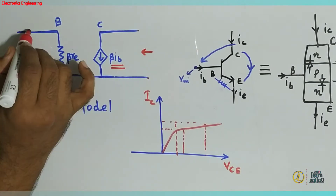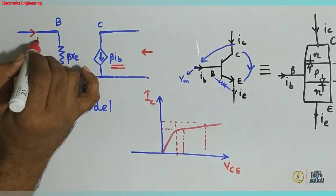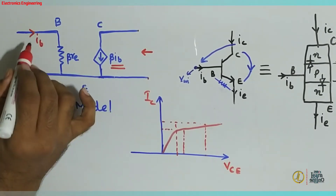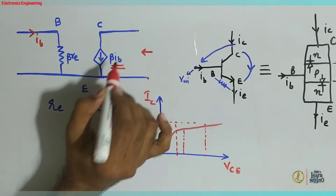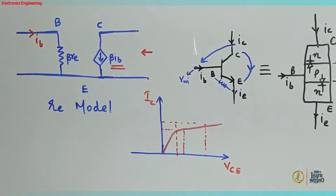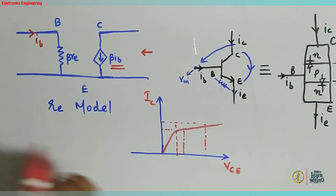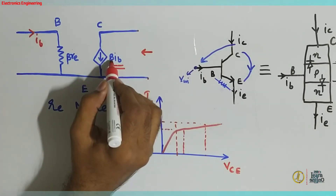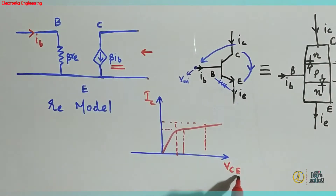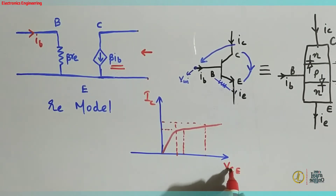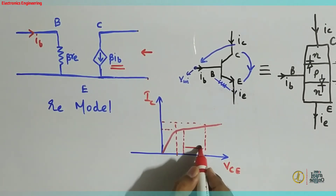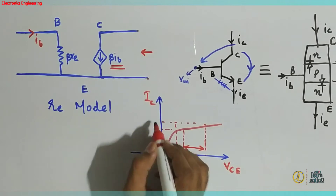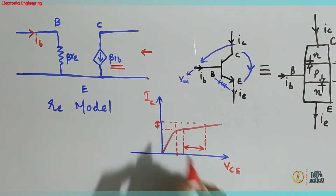I have to execute the current value. This is Ib. If we have to execute the current value, what is the problem? That is the problem here. The current is also such that the output voltage is 0. If the output voltage is not 0, then the current is 0. That is the problem.